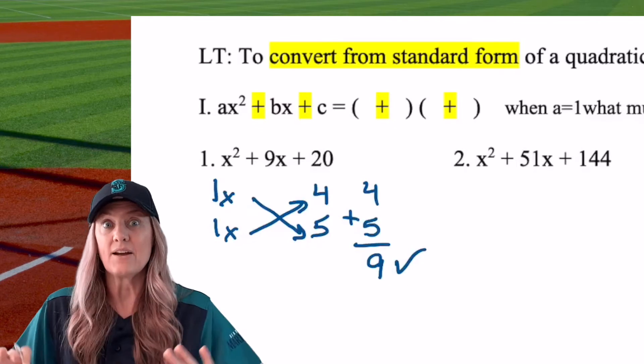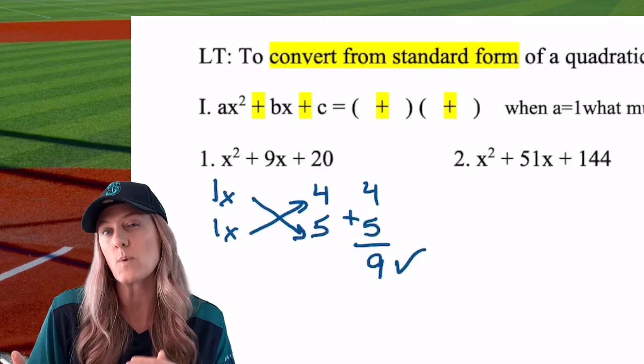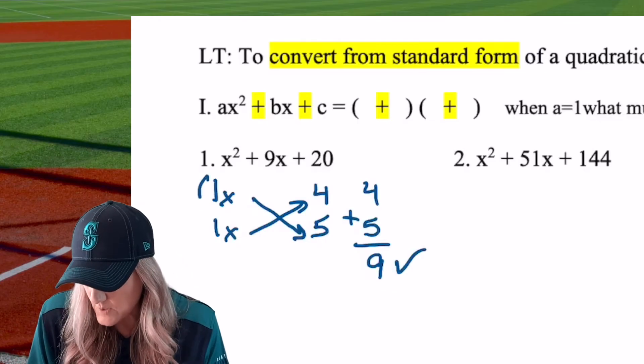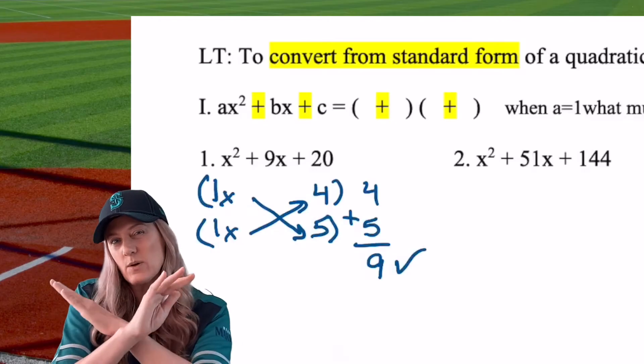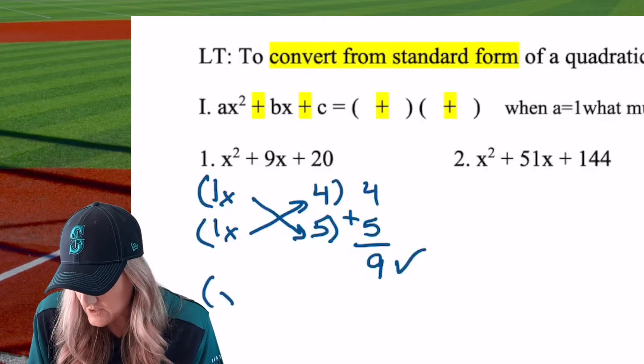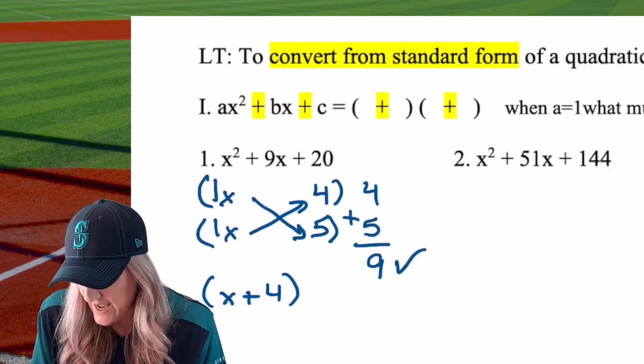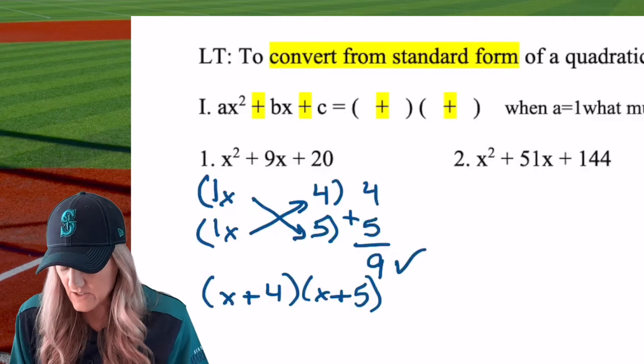But look at how we check it in this crisscross method. I multiply across, I get a four, multiply across, get a five, and then simply add it up. Did I get nine like I wanted in the middle? Check, I did. So this is correct. Now here's the most important thing because we have the right answer, but we have to write it in the correct form. This creates our two factors straight across. We checked it crisscross, but that's not how we write the final answer. So we go x plus four and x plus five. Starting to get the hang of it. Let's look at the next one.